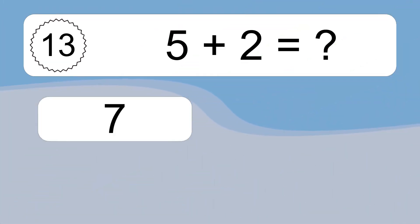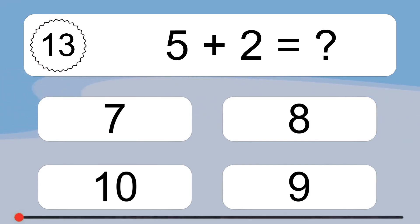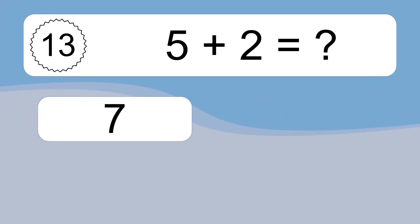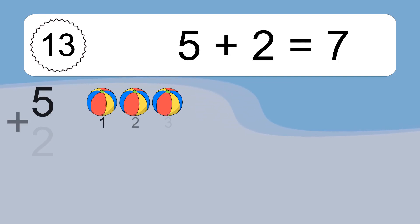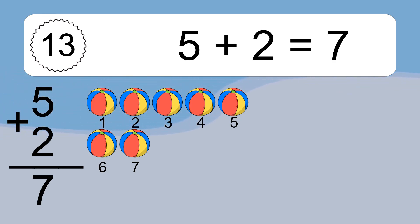5 plus 2 equals what? 5 plus 2 equals 7. Let's count it: 1, 2, 3, 4, 5, 6, 7.